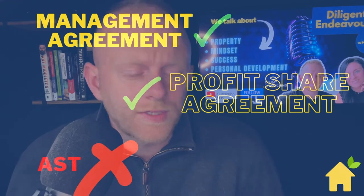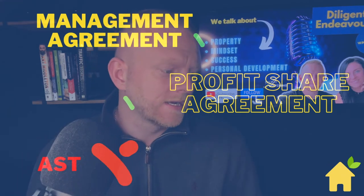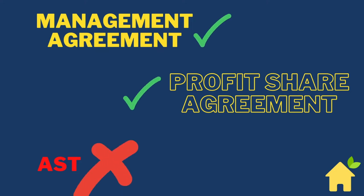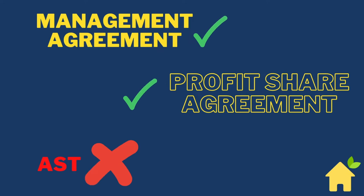The correct agreements are a management agreement or a profit share agreement — those are the typical agreements used. The management agreement is the same one which a letting agent would use with a landlord. Do not secure a house on an AST and then let it out again. That is subletting.